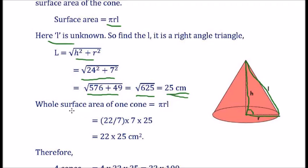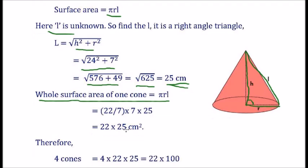So, we get the value of l also. Then, the surface area of cone is πrl. That is 22/7 × 7 × 25. That is 22 × 25 cm square. This is for 1 cone.